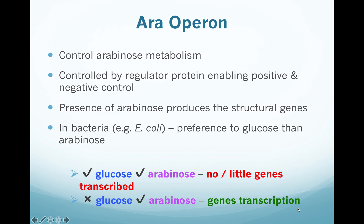The ara operon is controlled by a regulator protein to enable both positive and negative control — that's the special thing about arabinose. In the presence of arabinose it produces the structural genes. In bacteria, for example in E. coli, the preference for glucose is more obvious compared to arabinose. There are only two conditions unlike the four seen in other operons: if there is glucose and arabinose, very little or no genes are transcribed because bacteria prefer glucose. If there is no glucose but arabinose is present, genes will be transcribed.